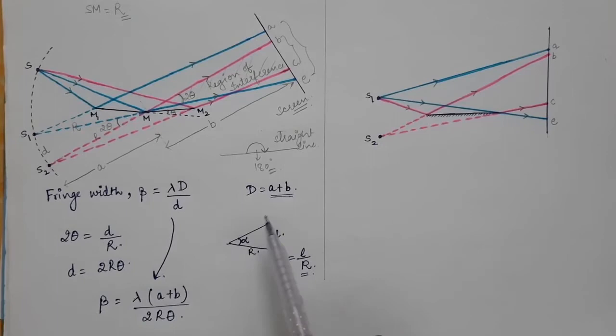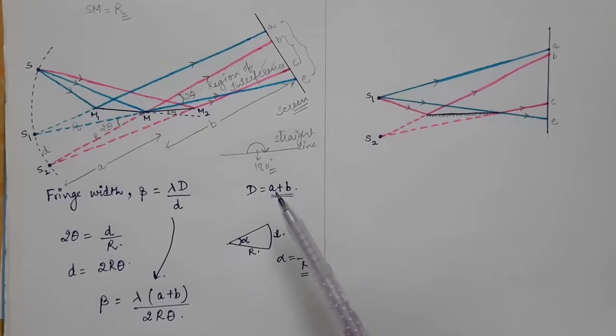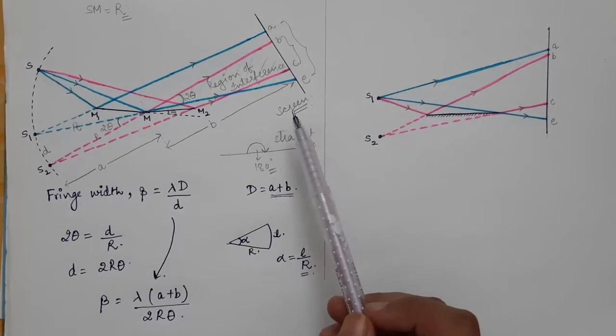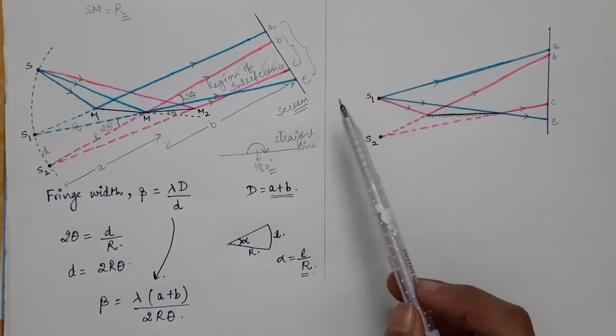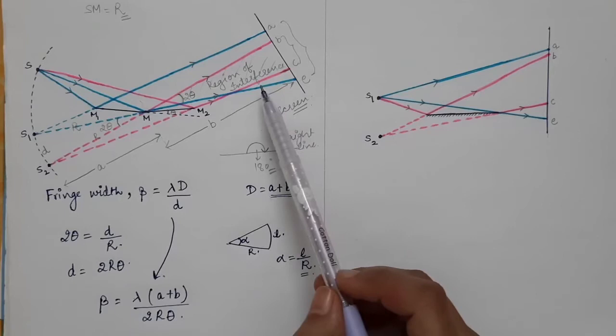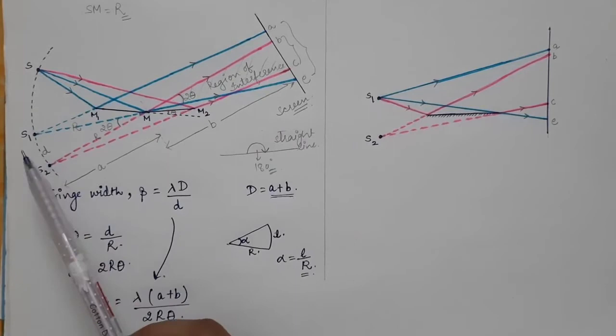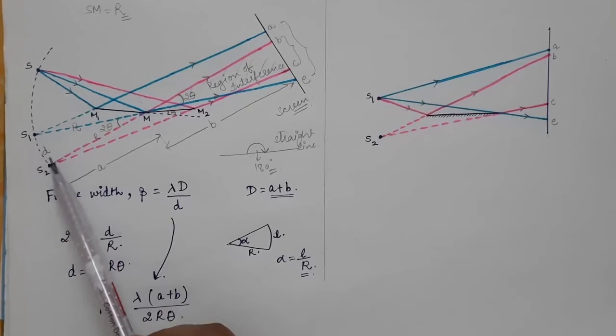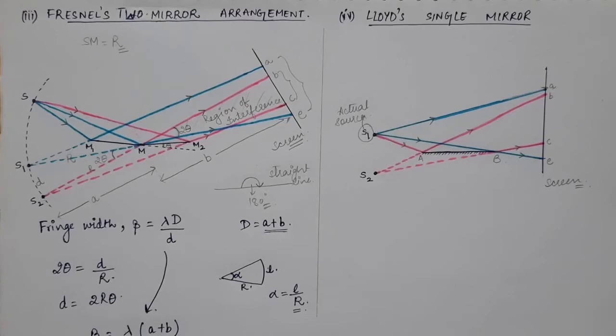So we can find the fringe width in Fresnel's two mirror arrangement. The principle is essentially the same: a single wavefront is divided into two parts, the two wavefronts are made to interfere, and an interference pattern is observed. This setup is similar to Young's double slit experiment and Fresnel's biprism, as in both cases two virtual sources are obtained from a single source S.